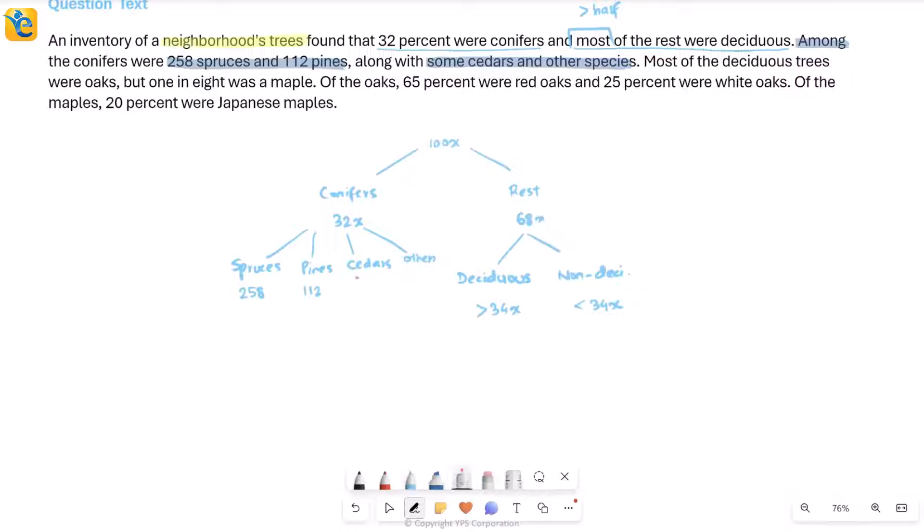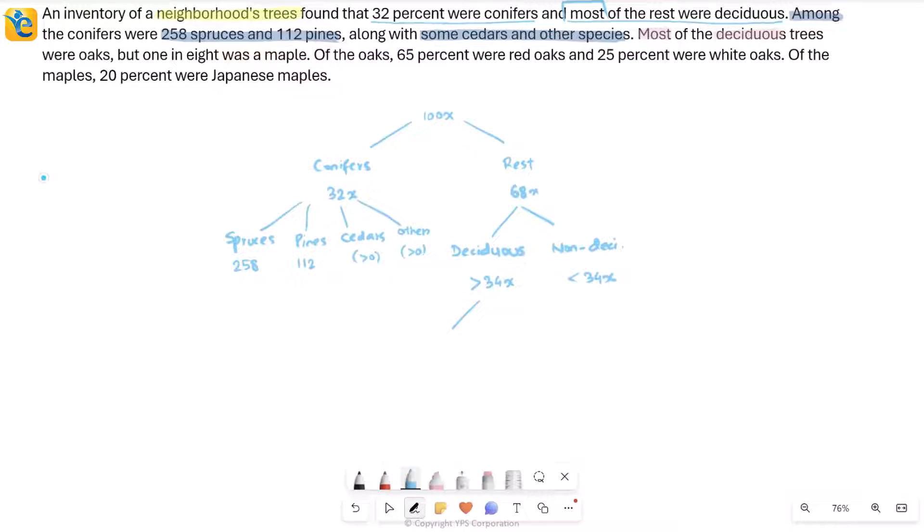I made this slightly neater. Although I can't say anything about the numbers here because there were some, I can at least say these are both positive numbers. It's going to be something more than zero. Now read further. Next piece of information is about when you go deeper into the deciduous type, it is saying most of deciduous trees were oaks.